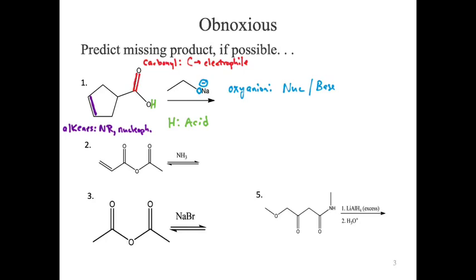Negatives are challenging because they can do both nucleophile and base. To differentiate: nucleophiles attack carbons, bases attack hydrogens — that's our ultimate differentiator. Both options exist here and no arrows have been drawn yet. In this case, you're being asked to predict the product, so you have to decide: nucleophile or base? The differentiator is size — nucleophiles need to be small to get in. Large tends to favor base behavior.